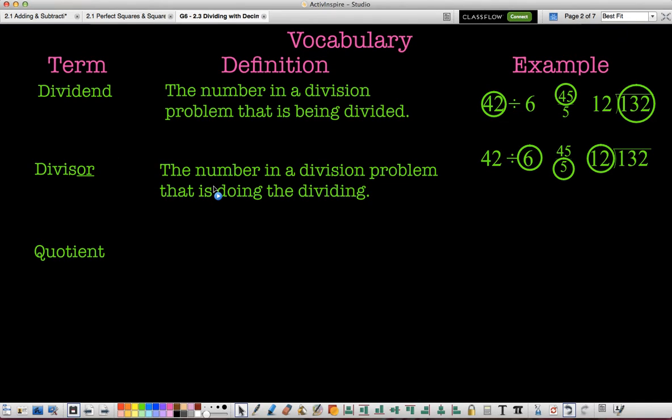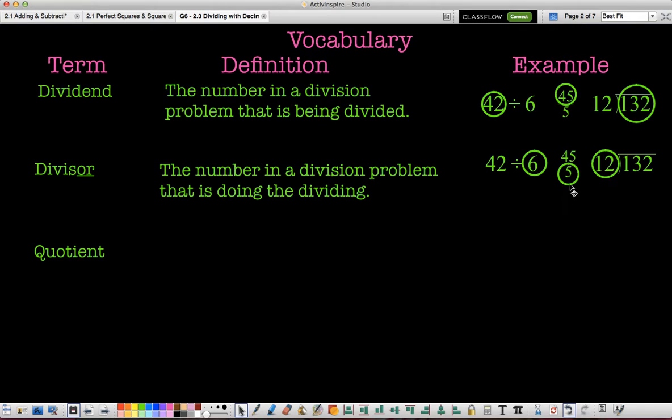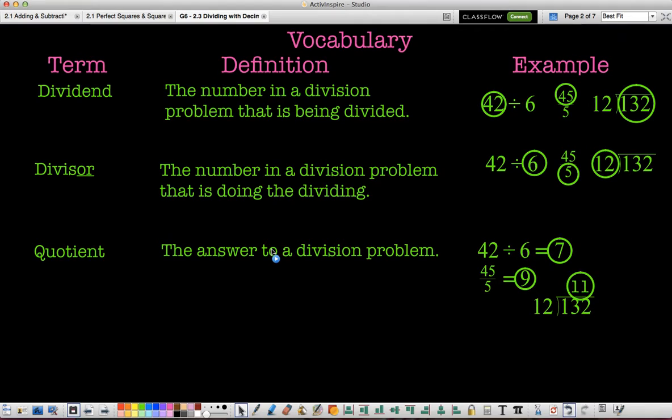The divisor is the number in a division problem that is doing the dividing. And that would be everything that is dividing the dad. In this case, 6, 5, and 12, so the last, bottom, or outside number. And then the quotient is the answer to that division problem. So if we were to go through and actually solve these problems, 7, 9, and 11 would be our quotients.